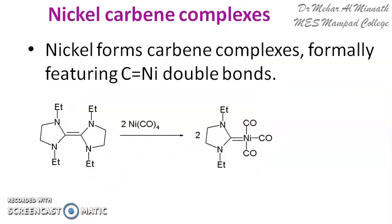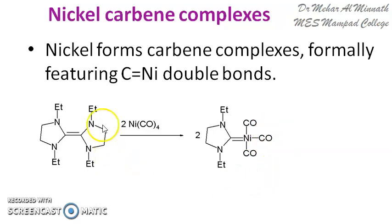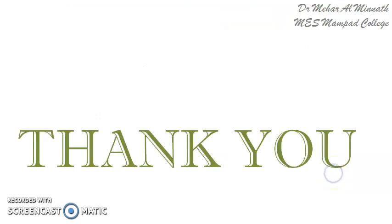The last organonickel reagent we will discuss is the nickel carbene complex, where a nickel-carbon double bond (C=Ni) is formed. Unlike all other cases where we had a C–Ni single bond, in the nickel carbene complex we have a C=Ni double bond. This is synthesized by passing nickel tetracarbonyl over an alkene. These are the key organonickel reagents used in organic synthesis.